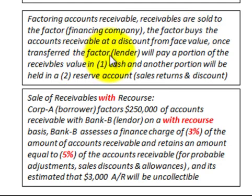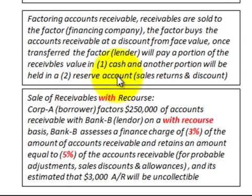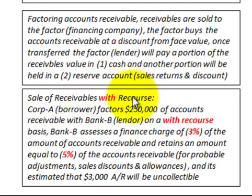Once the accounts receivable are transferred to the factor, Bank B will pay a portion of the receivables' value in cash, and another portion will be held as a reserve account for sales returns, allowances, and discounts.